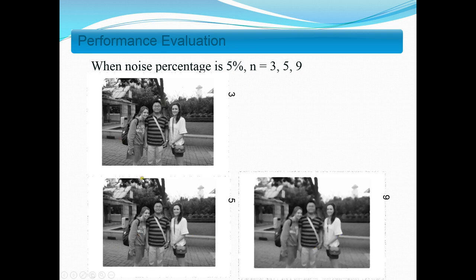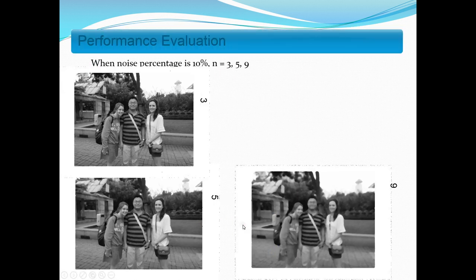We found that as the window size grows, when it is 5, the noise is further reduced. The changes in noise percentage are approximately 0.4% overall.